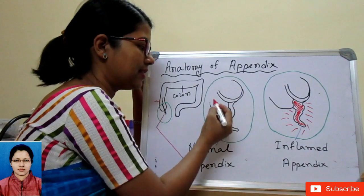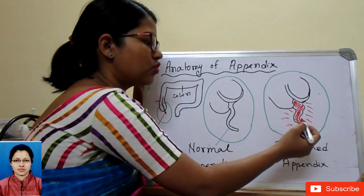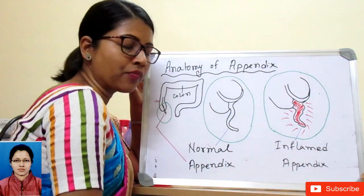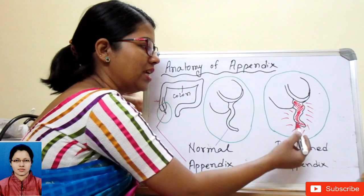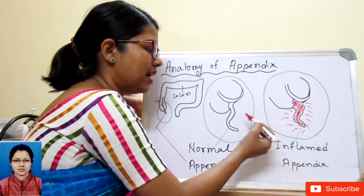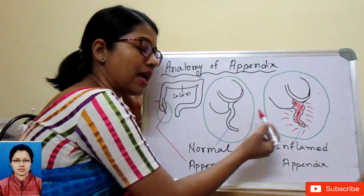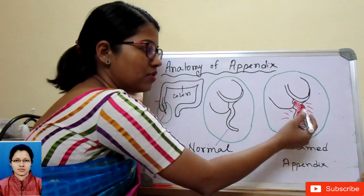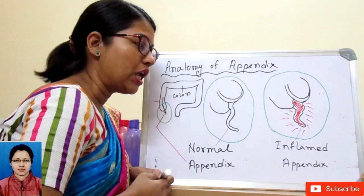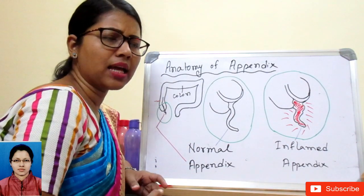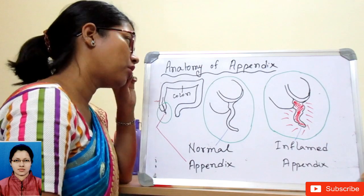Here we can see a bigger image of the appendix. This one is a normal appendix, and this one is an inflamed appendix. Due to various etiological factors it can become inflamed. We can compare the size, shape, and appearance of the normal versus the inflamed appendix. The patient will feel pain on touch, there will be tenderness, and many other clinical manifestations.